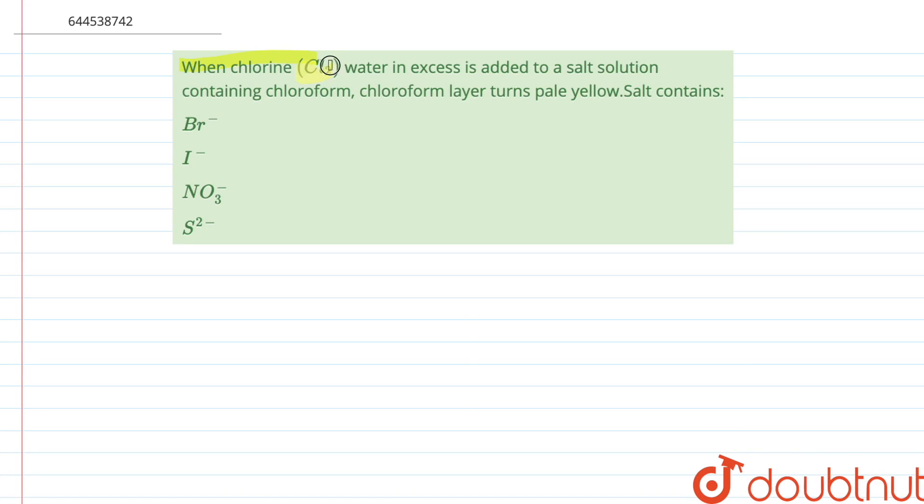When chlorine, that is Cl2 water—chlorine water in excess—is added to a salt solution containing chloroform, the chloroform layer turns pale yellow. The salt contains which of these given radicals?